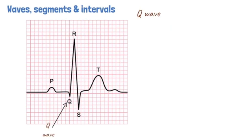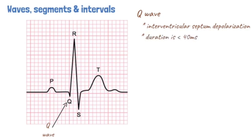A Q wave represents the normal left-to-right depolarization of the interventricular septum. A normal Q wave is less than 40 ms in duration, that is less than 1 small square. It is less than 2 mm in amplitude and less than one-fourth of the total depth of the QRS complex.